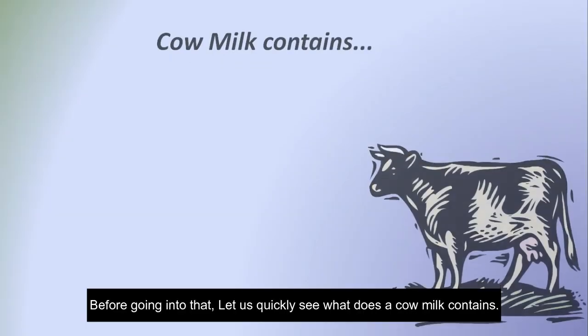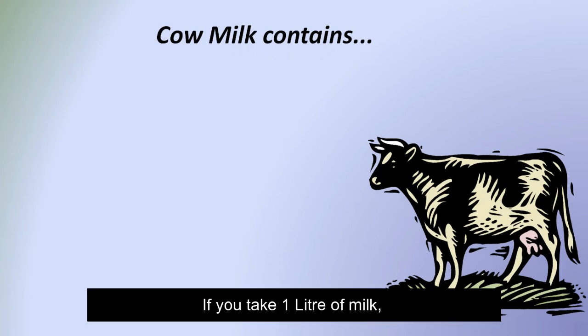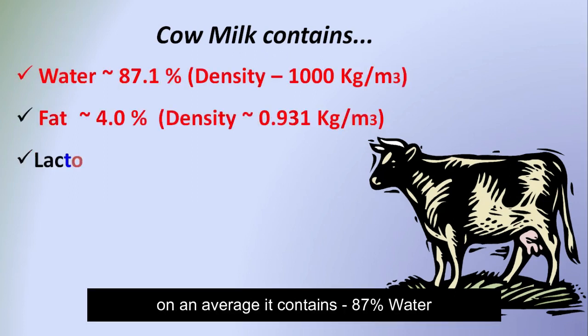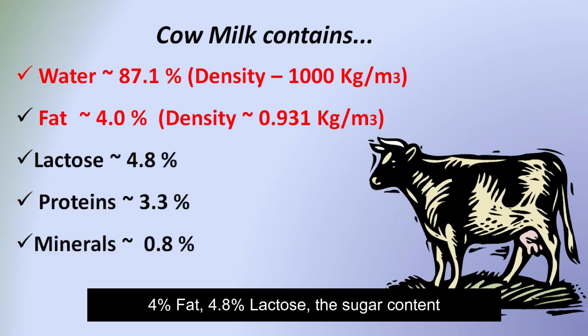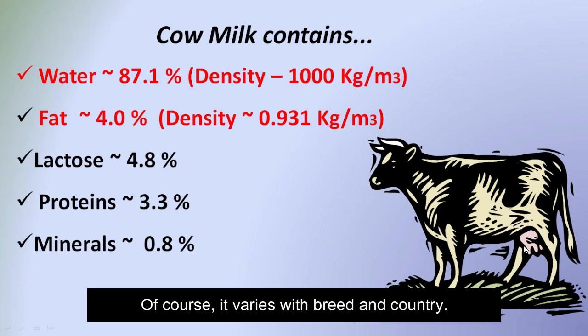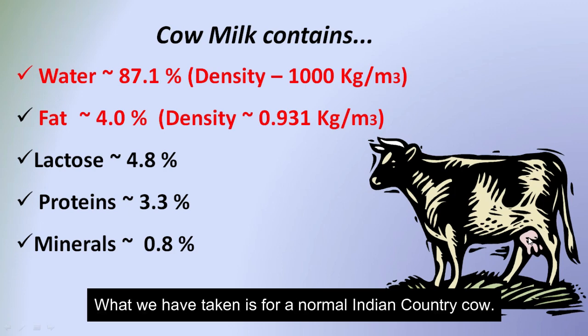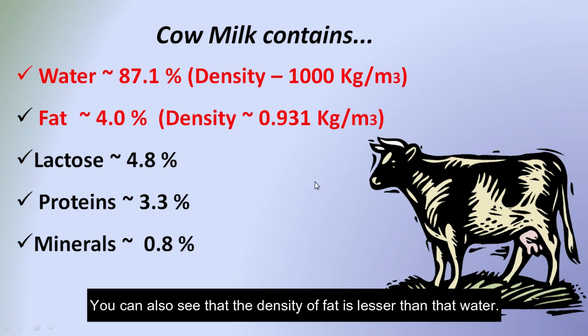Before going into that, let us quickly see what cow milk contains. If you take one liter of cow milk, on average it contains 87% water, 4% fat, 4.8% lactose — that is the sugar content — and the rest is proteins and minerals. Of course it varies with breed and country, but what we have taken is for a normal Indian breed cow.